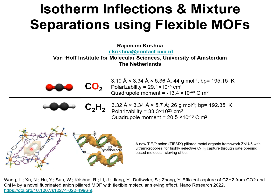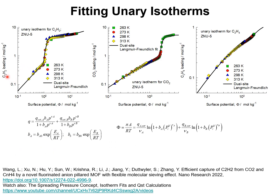I analyzed this mixture separation, and we begin our discussions by examining the unary isotherms in ZNU-5. The unary isotherm data for C2H2, CO2, and C2H4 at four different temperatures — 263 K, 273 K, 298 K, and 313 K — are plotted here as a function of the surface potential. The surface potential is defined by this expression, where the component loadings are described by the dual Langmuir-Freundlich isotherms.